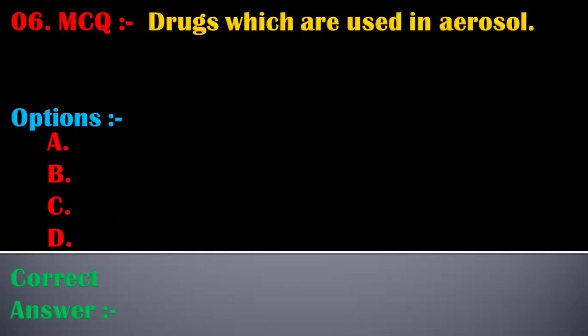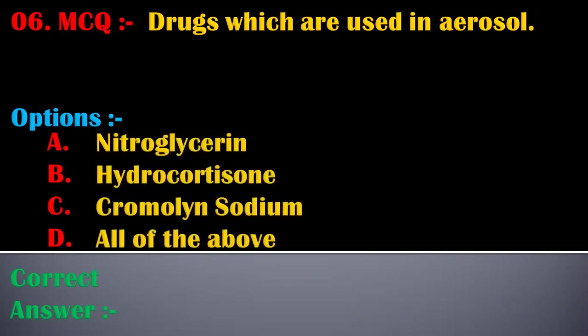The sixth MCQ is: drugs which are used in aerosols — options are: A) nitroglycerin, B) hydrocortisone, C) chromolin sodium, D) all of the above. The correct answer is D, all of the above. Drugs used in aerosols are nitroglycerin, hydrocortisone, and chromolin sodium.